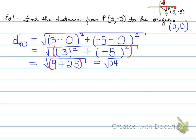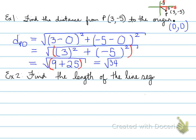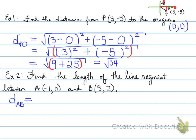That is the end of example one. Example two: find the length of the line segment between A and B — two coordinates where neither is at the origin. Length is the same as distance, so you're still finding the distance from A to B. You can use D or L, meaning the same concept, and you use the same formula: square root with brackets and squares.